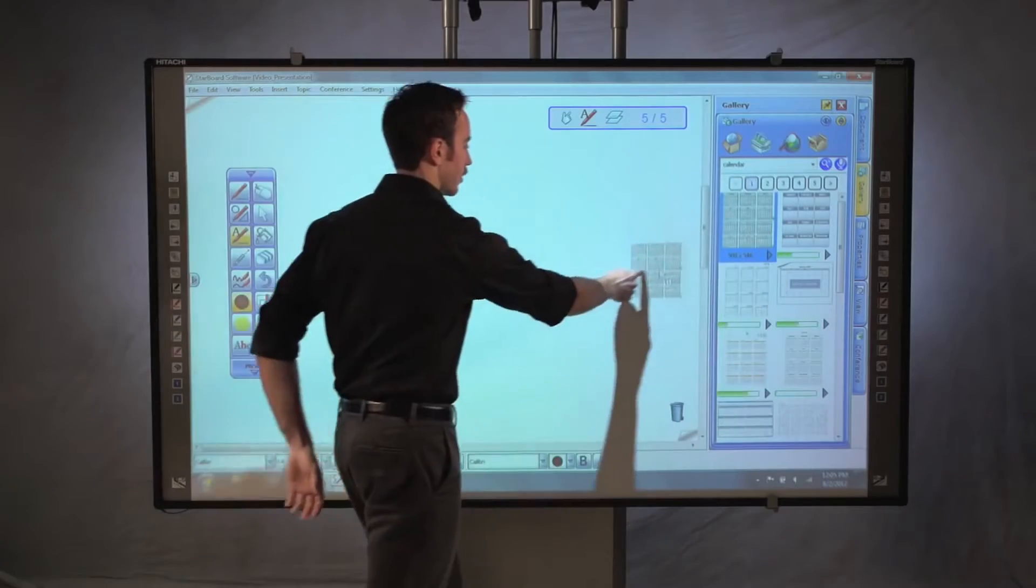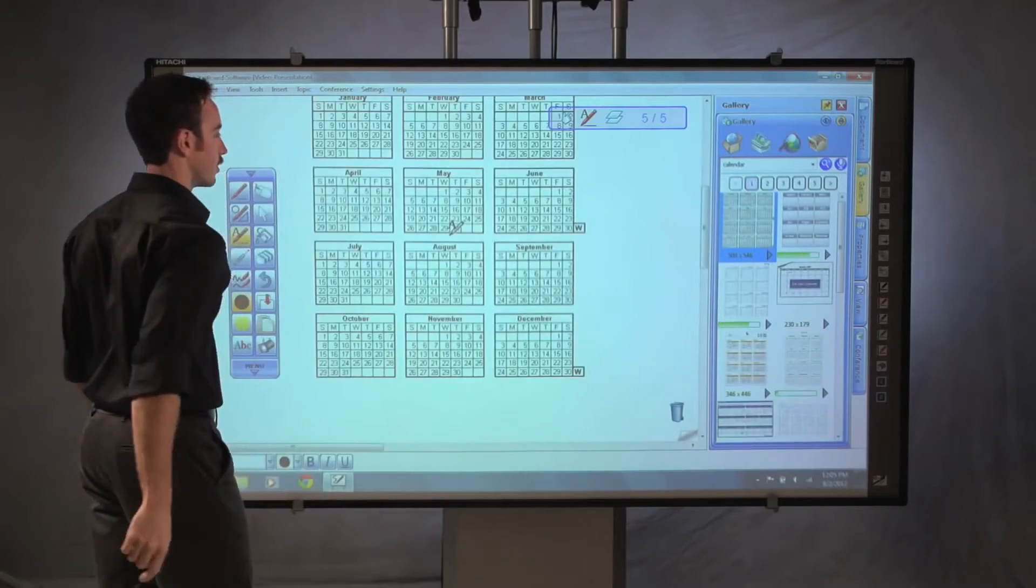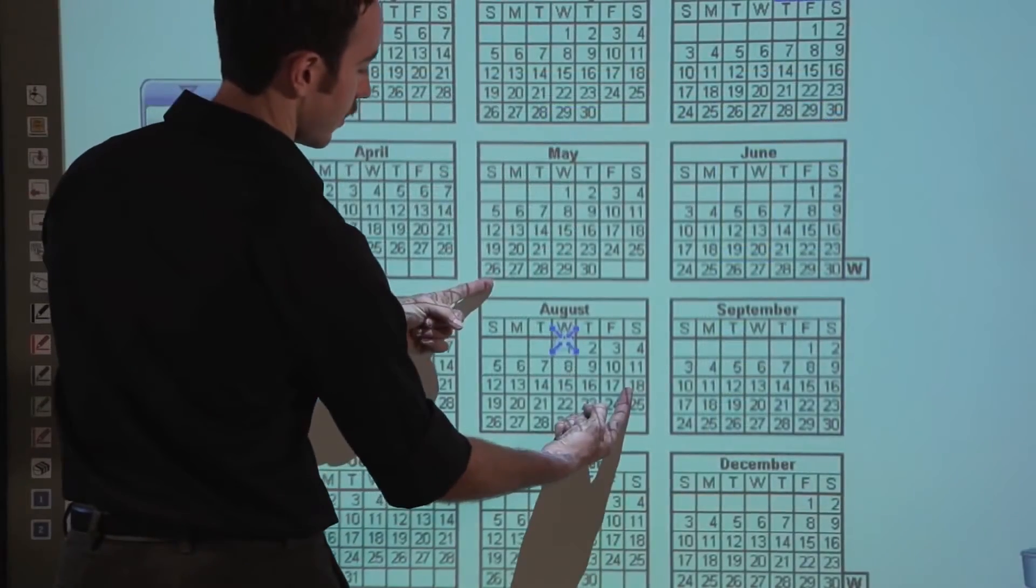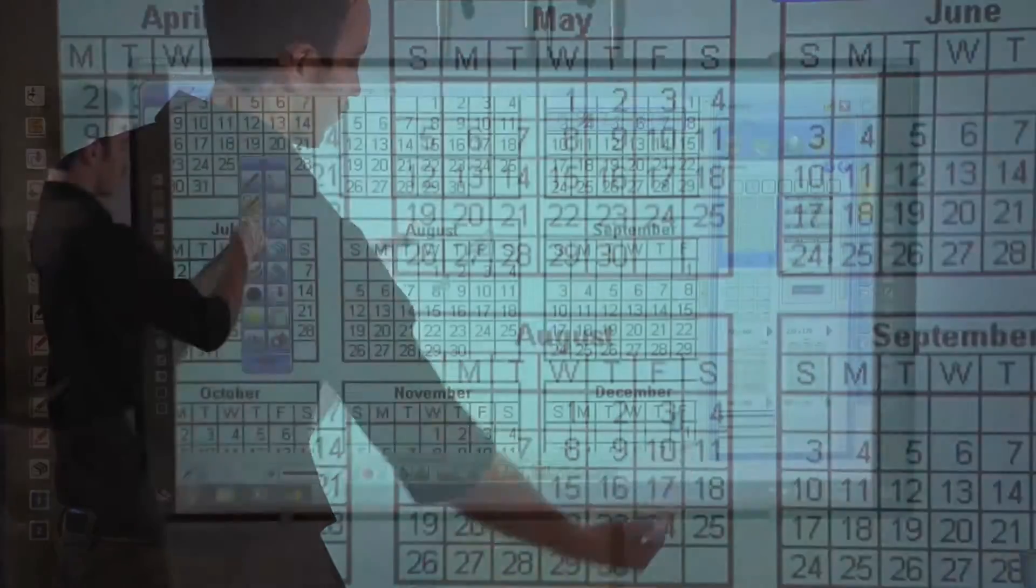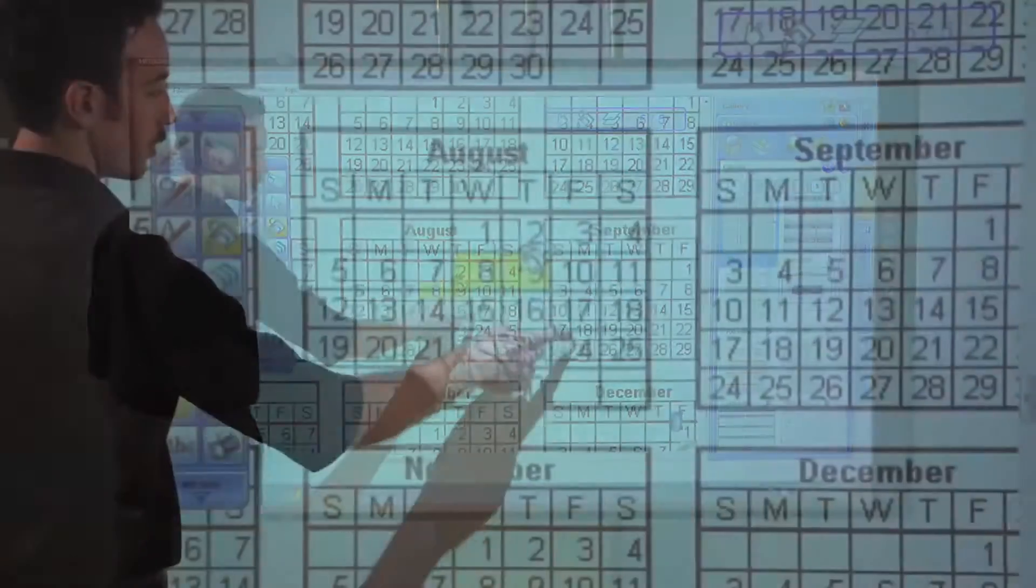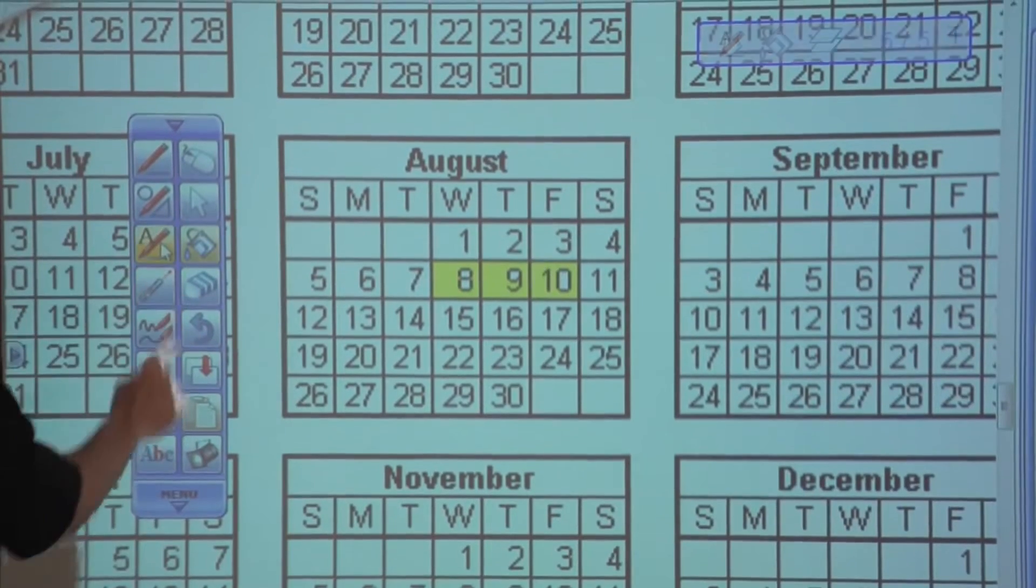Drag and drop images from the world's largest search engine into your whiteboard space. With the IntelliPen, you can zoom into an image. The fill tool allows you to highlight specific areas within an object. All of this is possible without ever leaving the software.